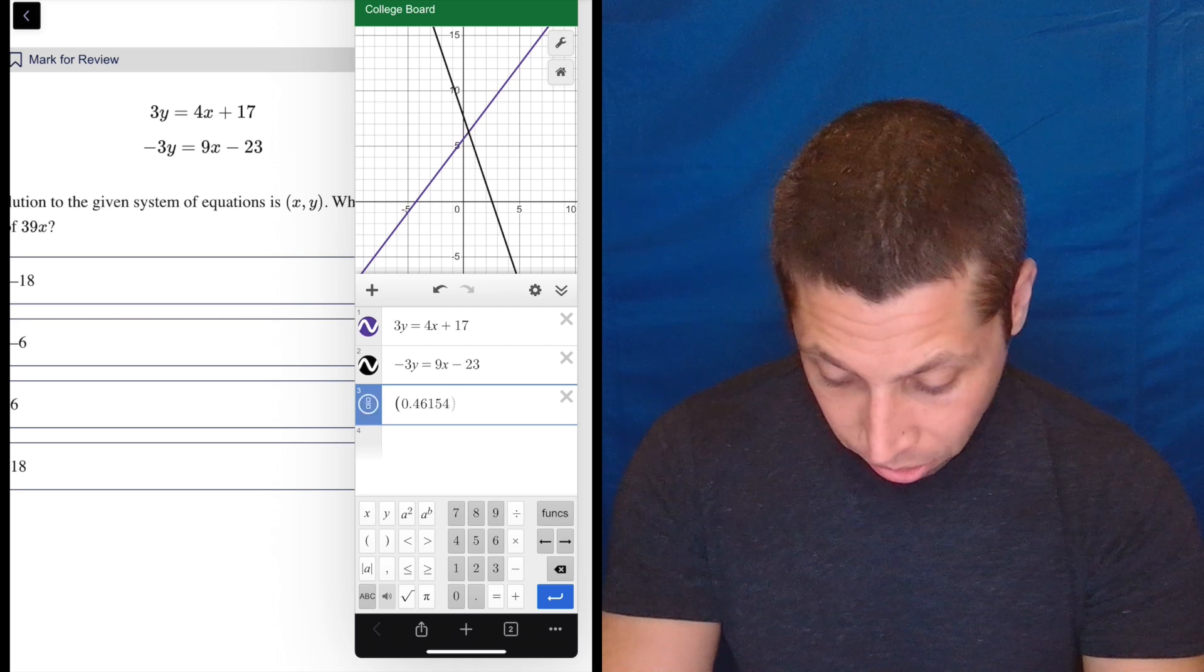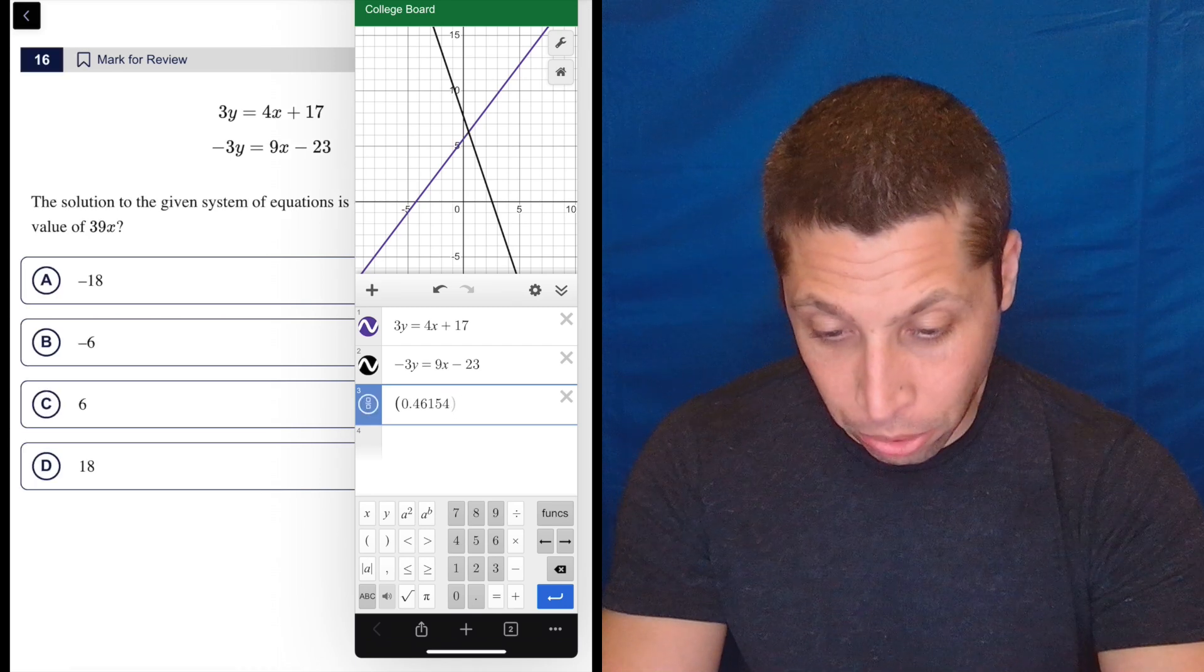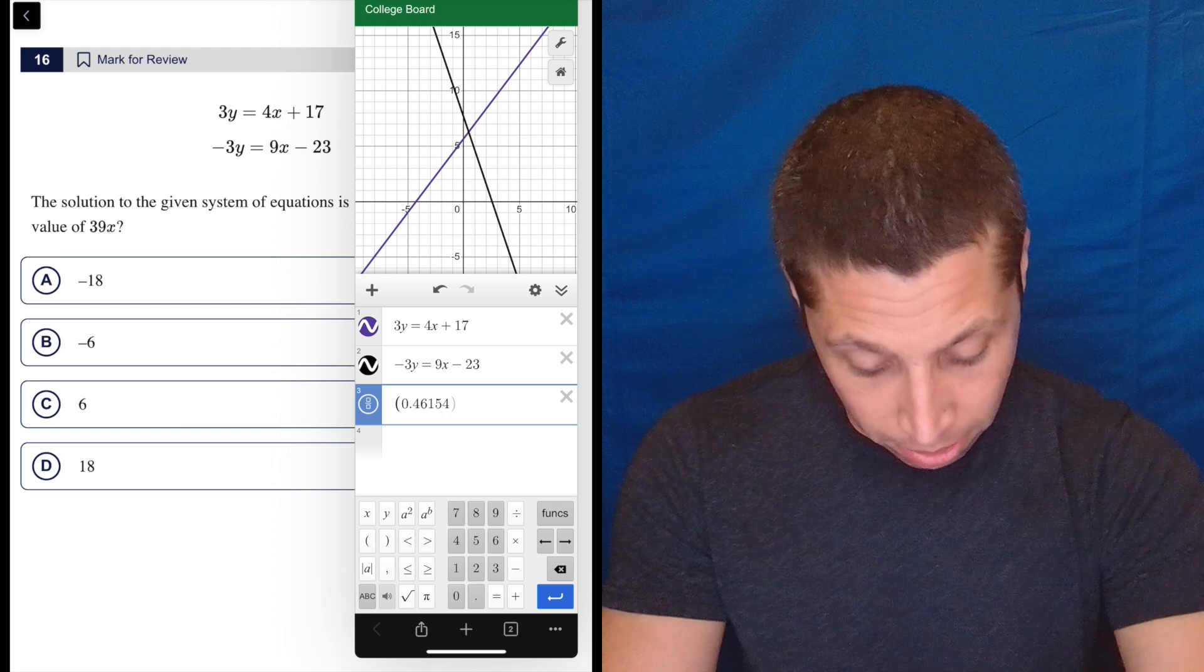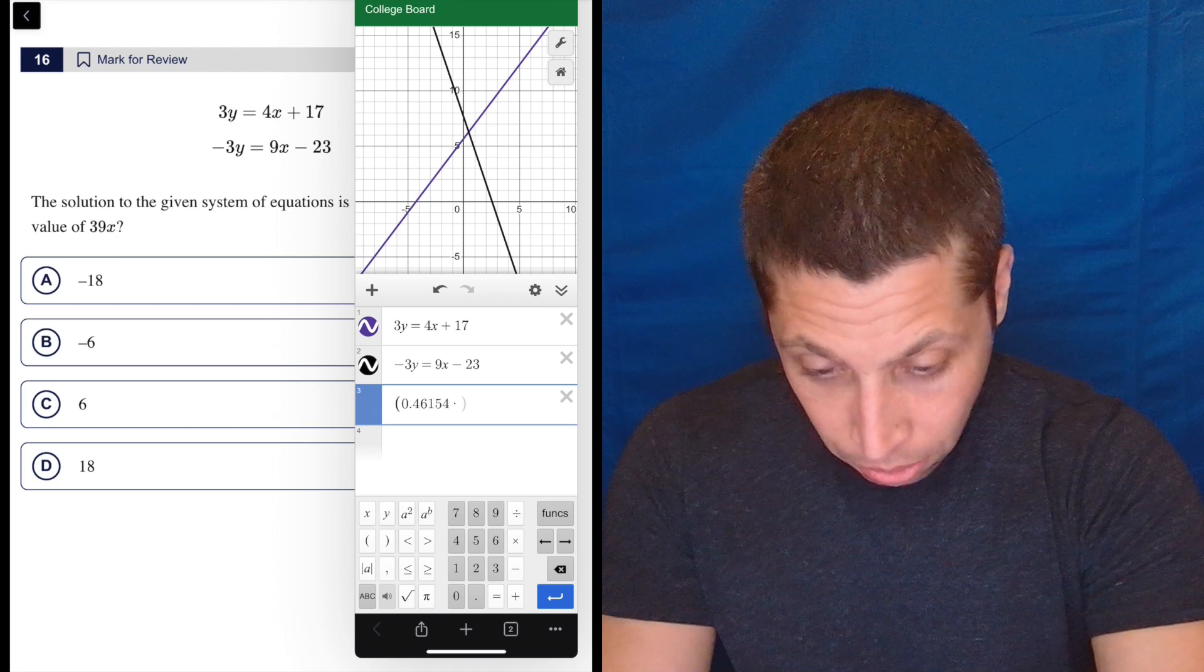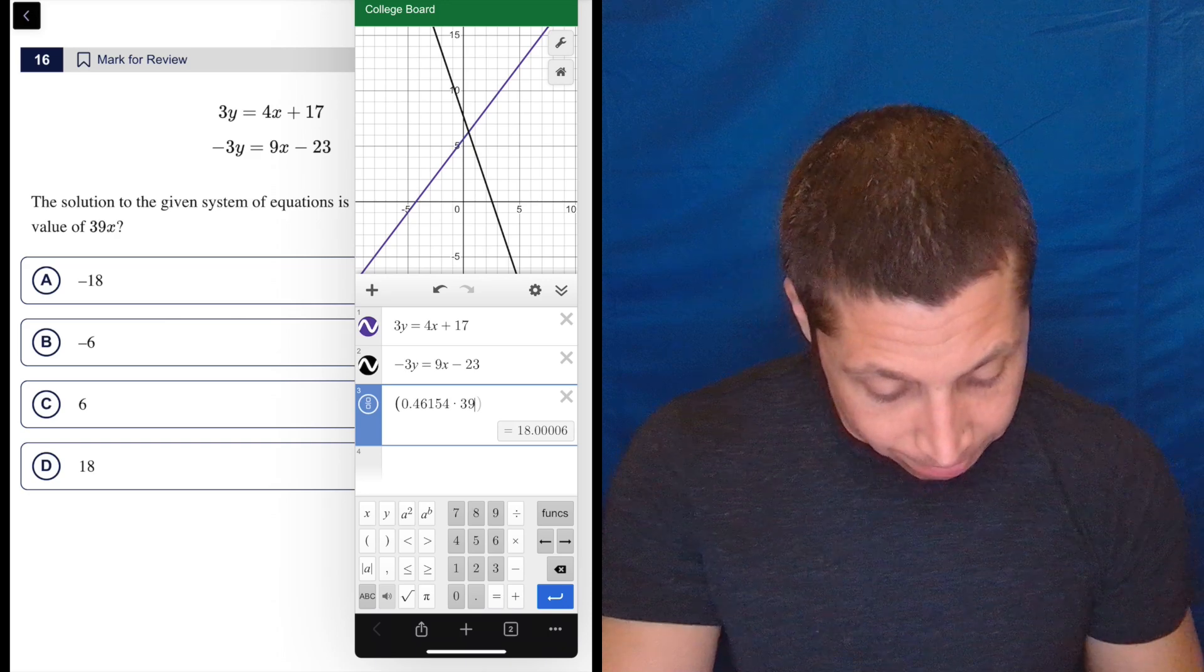And let's throw a little—it's 39x, right? So let's just times it by 39. It doesn't need to be 39 in the front.